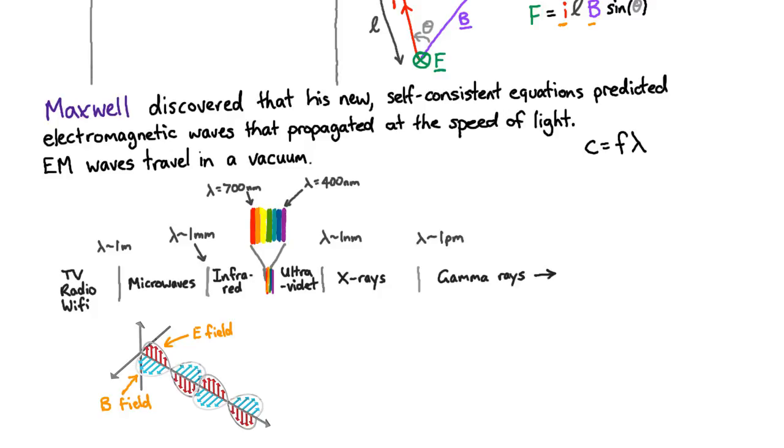The direction of the electric field, whether it's going up, down, or side to side, is known as the polarization of the wave.